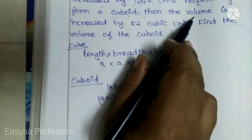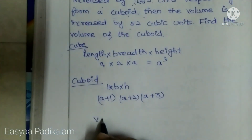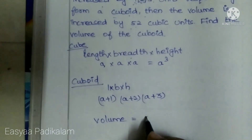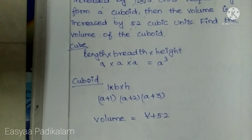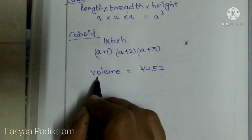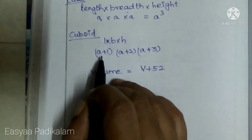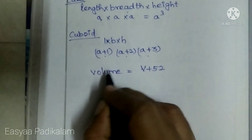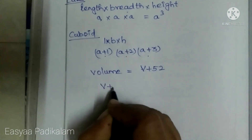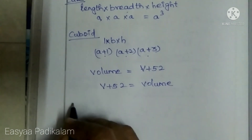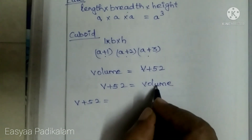The volume is increased by 52. So, volume V plus 52 is equal to the new volume. V plus 52 is equal to volume of the cuboid.